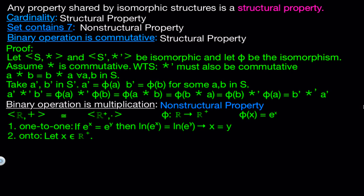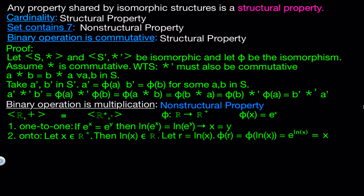To show this, we take an arbitrary positive real number, we'll call it x, and we want to show that there exists a real number r such that phi of r equals x. If we can find this, then that tells us that every element in the set of positive real numbers is getting mapped onto by the function phi, so that's why we say the function is onto. Now if x is in the set of positive real numbers, then ln of x is a real number, so we can let r equal ln of x. Now phi of r, which equals phi of ln of x, actually just equals x, so we have shown that this function is onto.